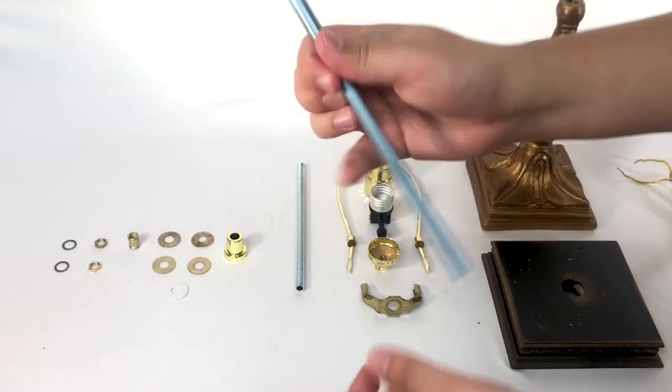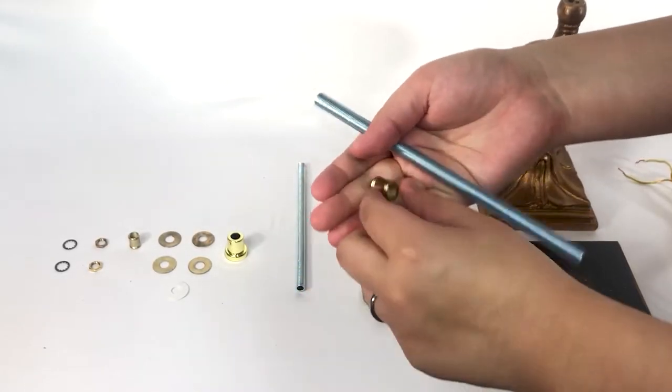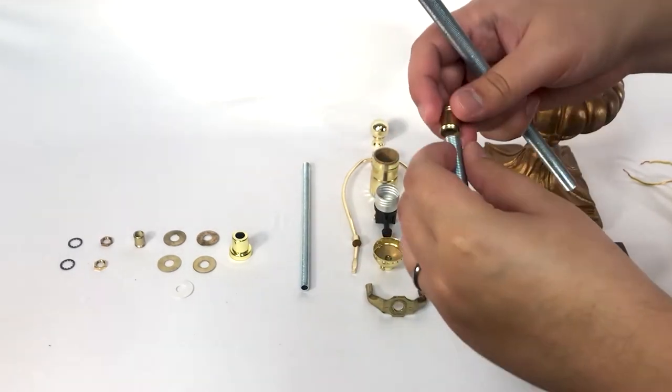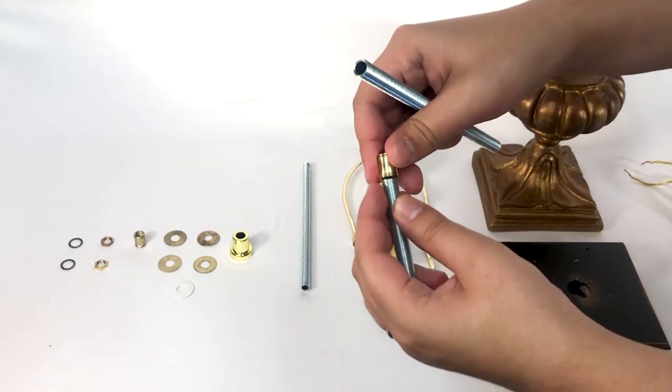Using the threaded pipes and pipe connectors, create a single pipe that is long enough to extend above the top of your lamp base by about one inch.